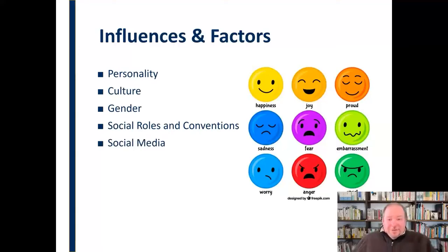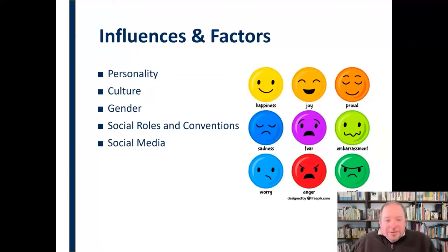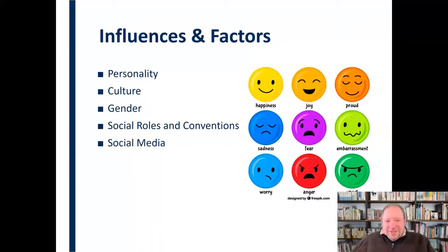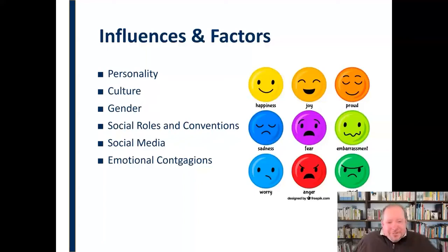Social media has had a major impact on emotion as well. We see what we call the disinhibition effect — meaning people are more likely to express emotion more quickly and more strongly over social media because they are less inhibited in that context. We say and do things we wouldn't normally say or do in real life, because being on the other side of a screen gives a sense of permission to express emotions more strongly — which has both positive and negative attributes. Emotional contagions also play a role: emotion can absolutely be passed from one person to another. If somebody walks into a room with a really strong emotion, that emotion is going to rub off on everybody else — whether it's happiness or anger — and what we pass along to others will influence their emotion as well.